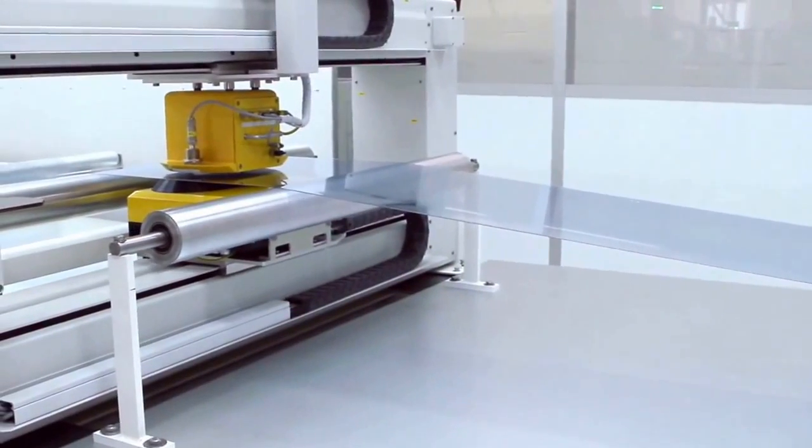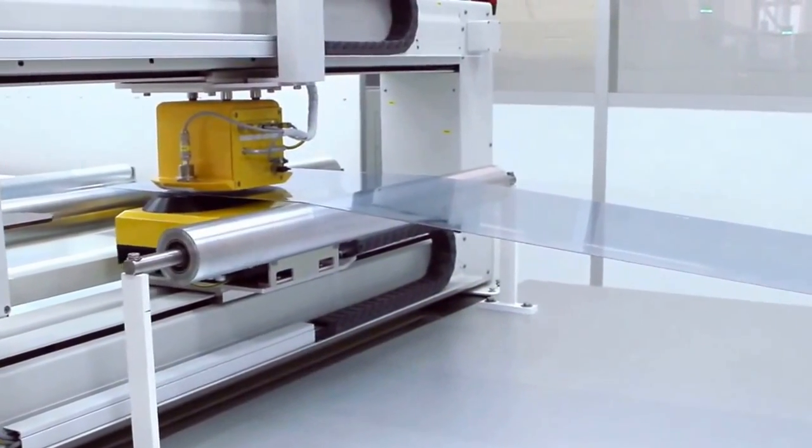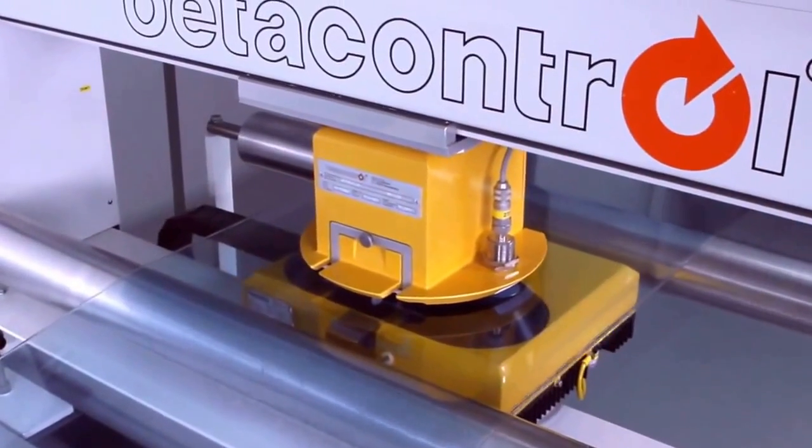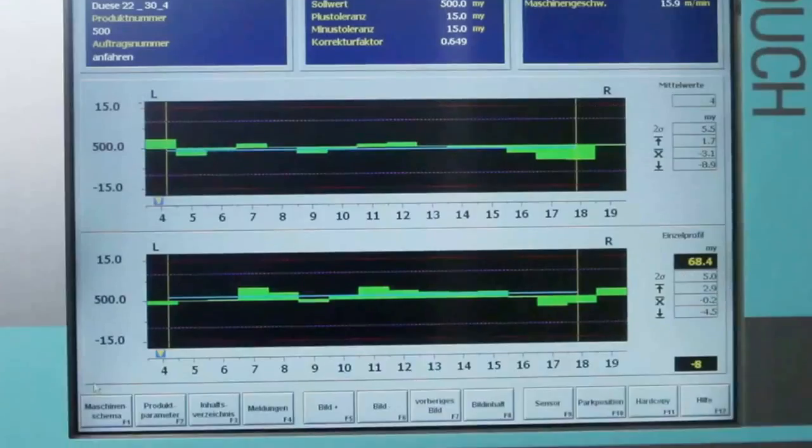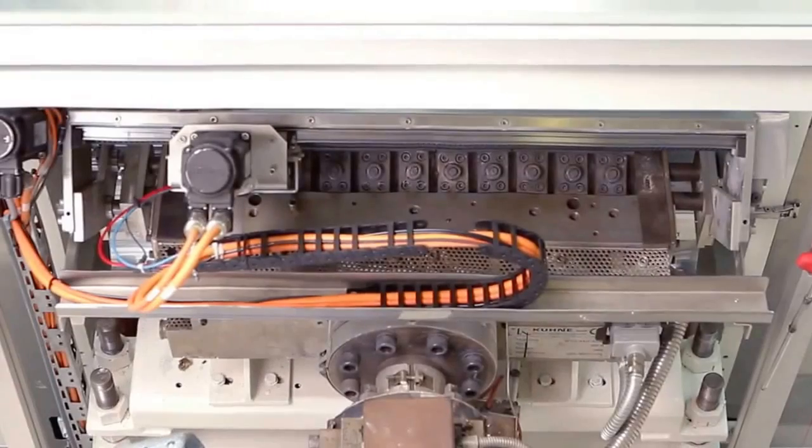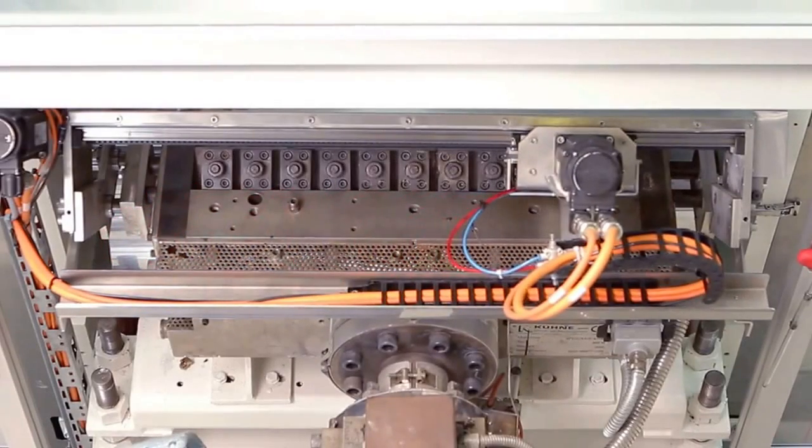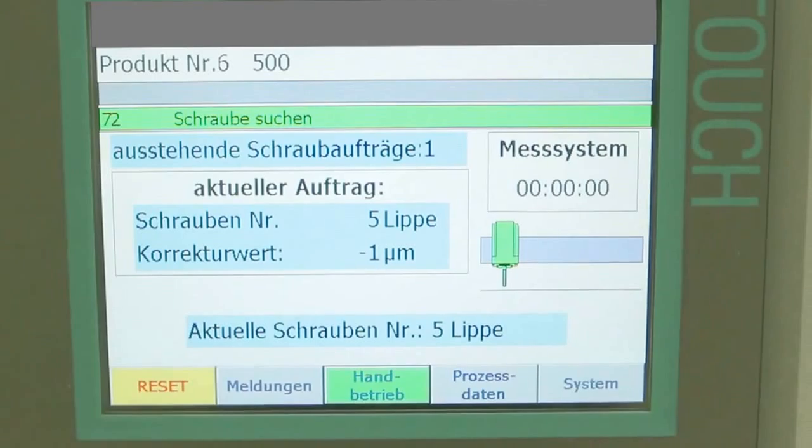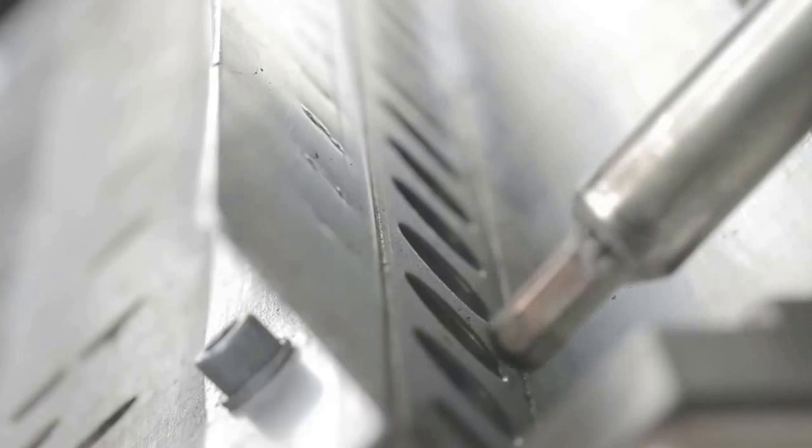In a fully automatic process, the film is measured continuously and recorded. Thickness deviations are automatically detected and corrected by the automatic die adjustment system.